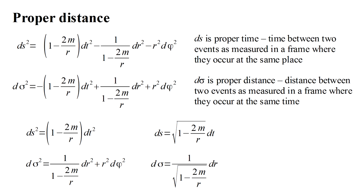d sigma equals one over the Schwarzschild factor times dr. For motion in the longitude or phi direction, d sigma is simply r d phi.